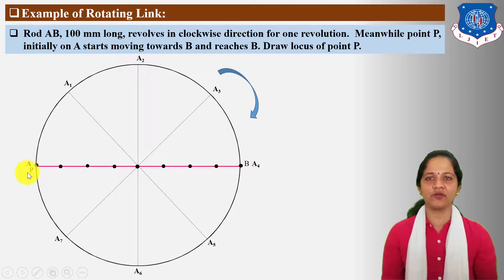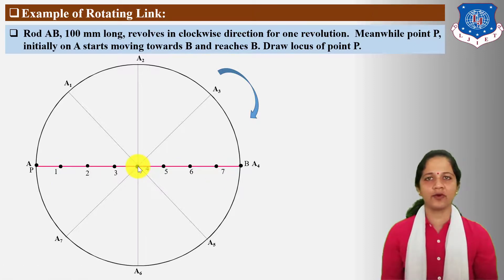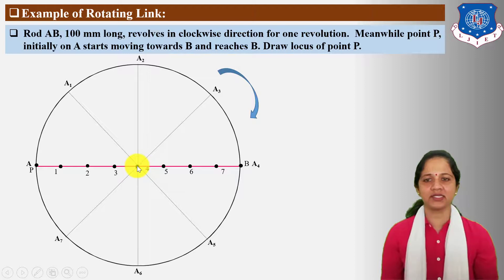The initial position of point P is at A. Mark division points of AB road as 1, 2, 3, 4, 5, 6, and 7. Now for finding locus points, take centre at point 4, radius 4-1, and cut arc on A1 road. Similarly, take centre at point 4, radius 4-2, and cut arc on A2 road.